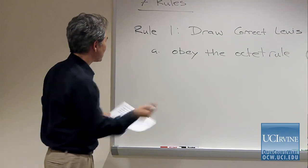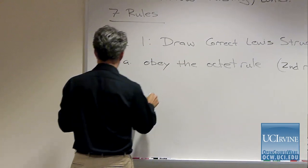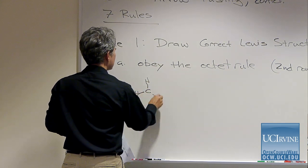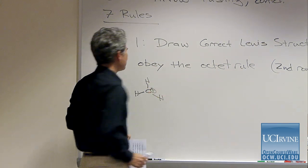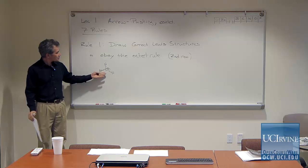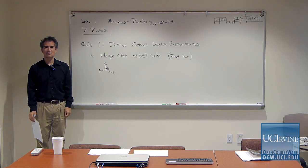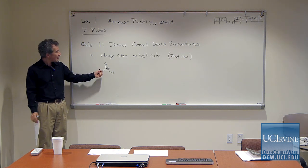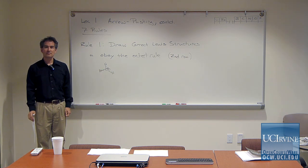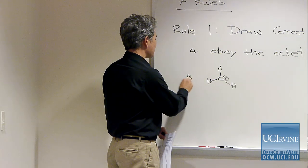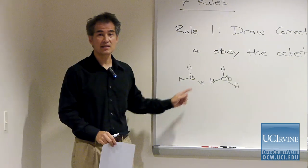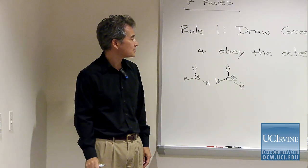Why is the octet rule important? The octet rule predicts that you want eight electrons on second row atoms. If you ask why the methyl cation is so reactive, it isn't because of the positive charge — it's because it lacks eight electrons. Boron is about as reactive as a methyl cation to most species in solution, and it has no charge, but it desperately wants an octet of electrons.